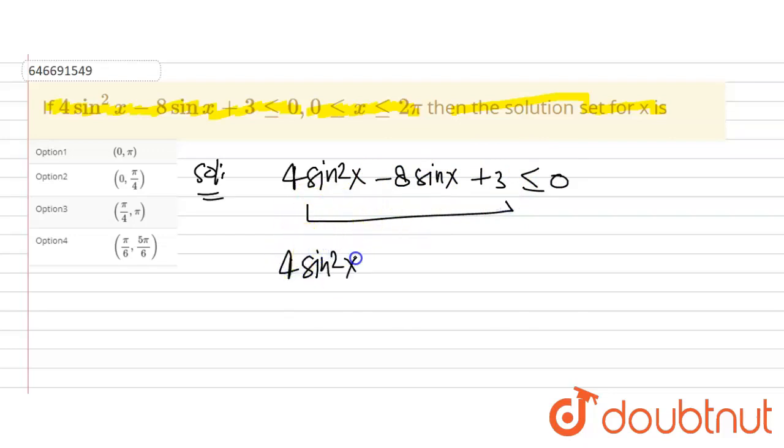This is 4sin²x - 6sinx - 2sinx + 3 ≤ 0. From here, taking 2sinx as a common factor, we get 2sinx(2sinx - 3), and from here take -1 as a common factor.